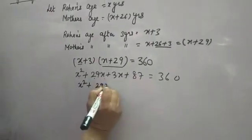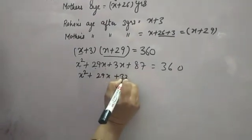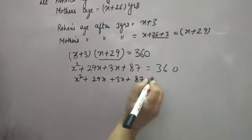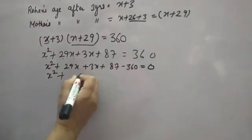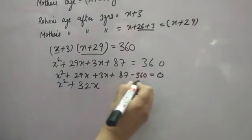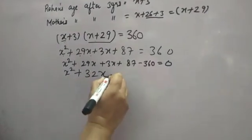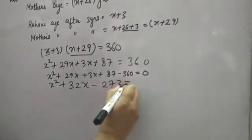X square plus 29X plus 3X plus 87 minus 360. 360 on the other side will become minus. Now, X square plus 29 plus 3 is 32X, 87 minus 360 you will get minus 273 equal to 0.